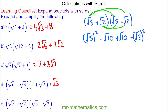The square root and the square cancel, so root 5 squared is 5, and negative root 2 squared is negative 2. The root 10 terms cancel to make 0. So we have 5 take away 2, which equals 3.